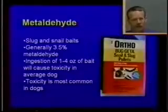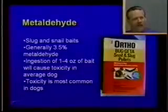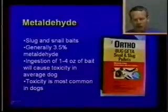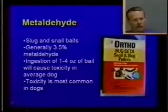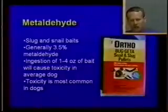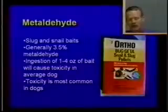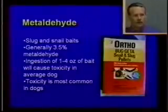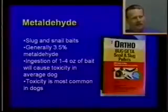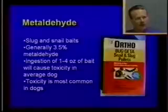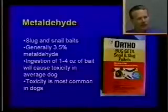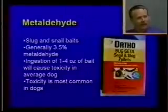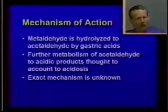Another interesting poison is metaldehyde, sold under brand names like Bug-Geta. It's a slug and snail bait commonly used in coastal regions. It's usually sold as a bait with 3.5% metaldehyde, and ingestion of one to four ounces of the bait can cause toxicity in an average-sized dog. Toxicity is most common in dogs due to their indiscriminate eating habits. We had a recent case of metaldehyde poisoning that was unfortunately confused with an incident of bioterrorism, resulting in the dog being carried away by the hazmat team — so it's important to recognize these more exotic poisonings.